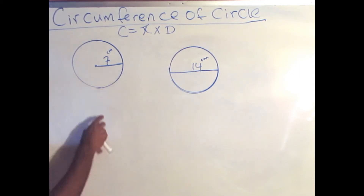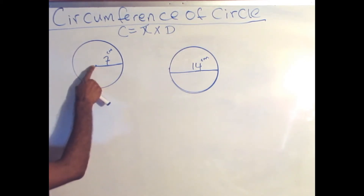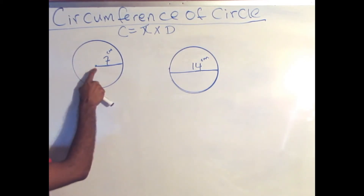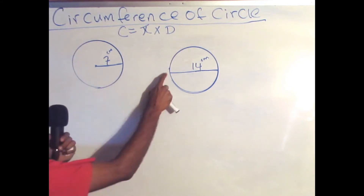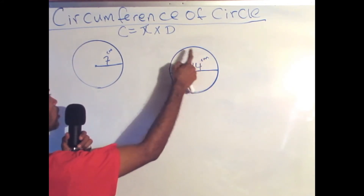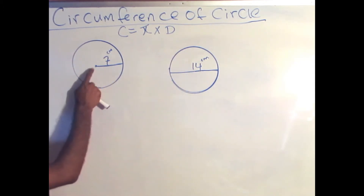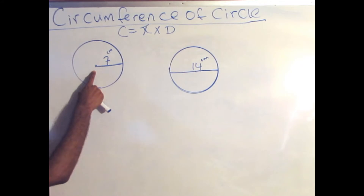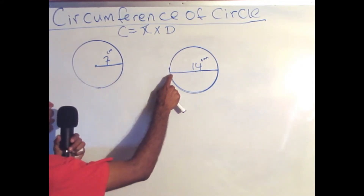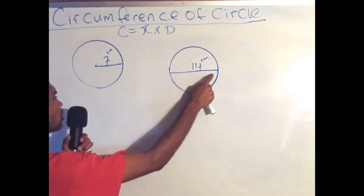We want to find the circumference of this circle, which has to do with the radius. The radius is a quarter of your diameter, and here we have the full diameter from one length to the next. So we want to find the circumference of this circle where the radius is a quarter and the diameter is the full length of the circle from west to east.